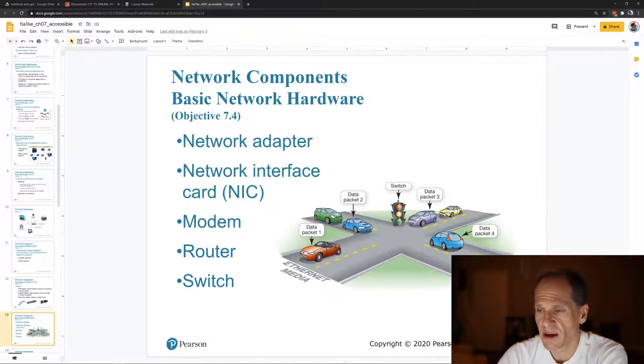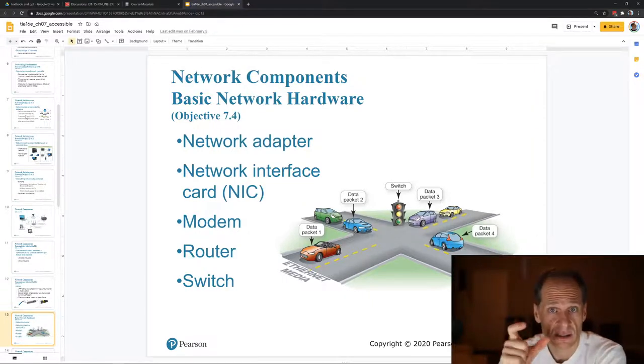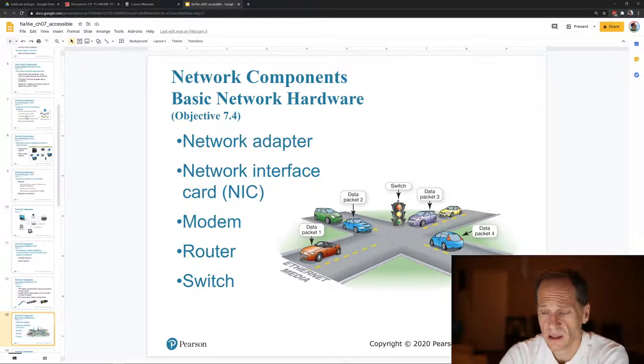And other basic hardware is like you have a network interface card, which is kind of like each computer has a way to interface with the network. And it's on a card, which is silicon chips and stuff on a piece of kind of cardboard material that plugs into your computer. Or it's built into the computer now. And then modems, routers, and switches.